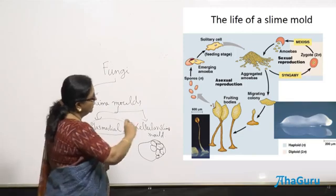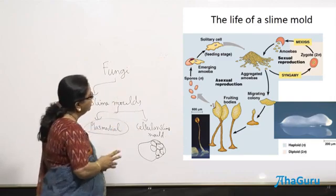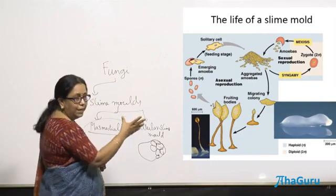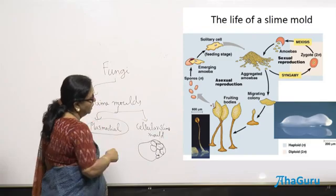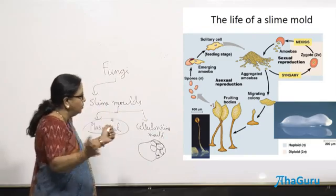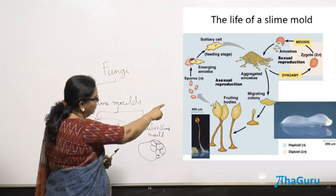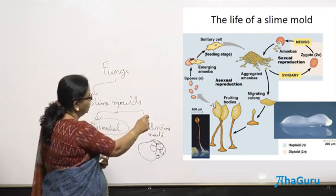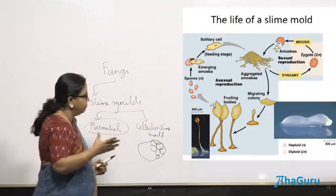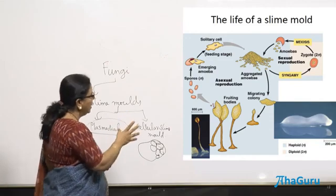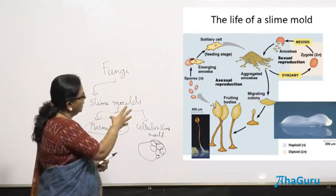As seen in the life history diagram: all these amoebae aggregate together during unfavorable conditions to form a colony, and they all move together. They look like a slug — they are nothing but all the amoebae that have come together to form a colony. Once the colony moves, at a particular time it will produce a fruiting body made up of aggregates of amoebae. They divide, it bursts open, it releases spores, and these spores germinate and produce amoebae.